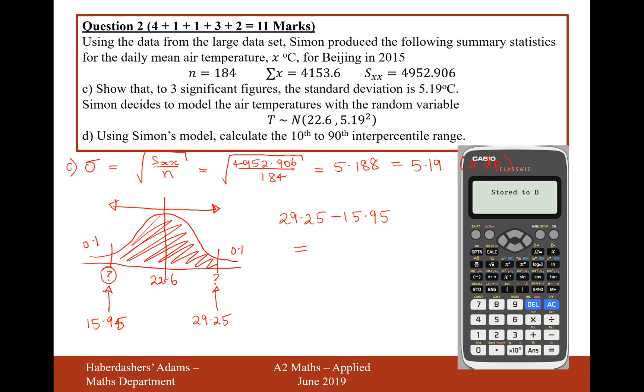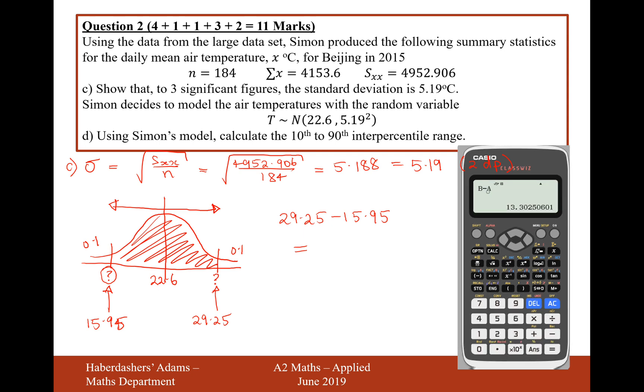And then we'll go back to the main mode on our calculator menu mode 1, and then we'll calculate B minus A, and that will give us the most accurate answer we can possibly find on our calculator: 13.3 to three significant figures. So there we are, that's the answer to part D.